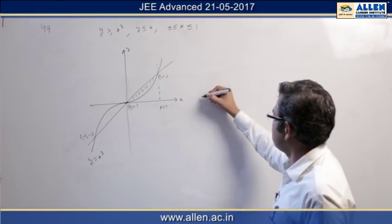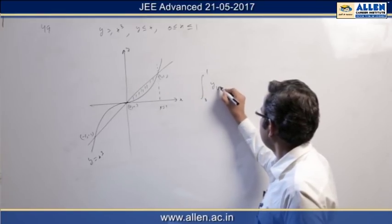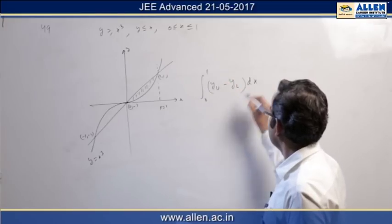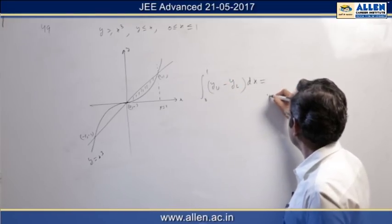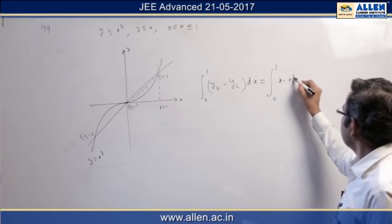So let us integrate from 0 to 1: y_upper minus y_lower dx. So this is integral from 0 to 1 of x minus x³ dx.